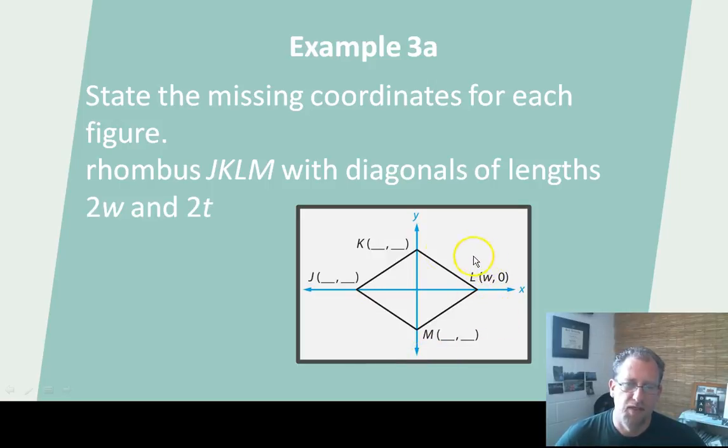This is W. I don't know necessarily what this is off the top of my head. And I don't have any idea what this is or this is. So I need some help. This is a rhombus, I'm told. And I'm told that the diagonal lengths are 2W and 2T. Let's think about this for a minute. The diagonal lengths are 2W. So this is at W, and this line is 2W long. What does that mean that this is? Negative W. Right? If this is 2W long, and this is at W, then this goes back 1W to 0, and then back another W to negative W. So this is at negative W, 0.